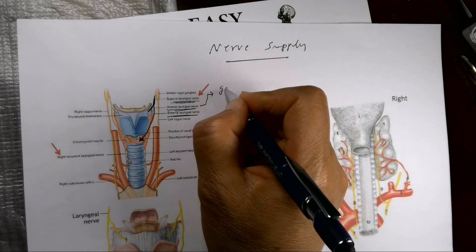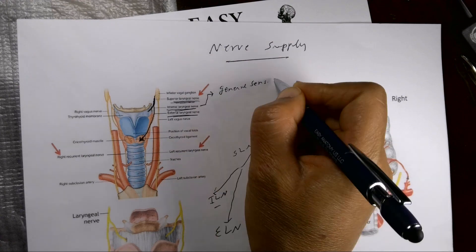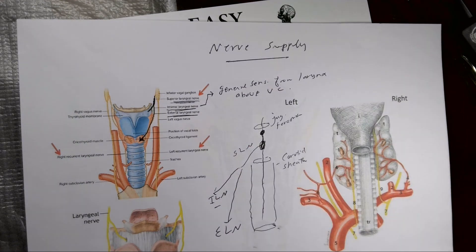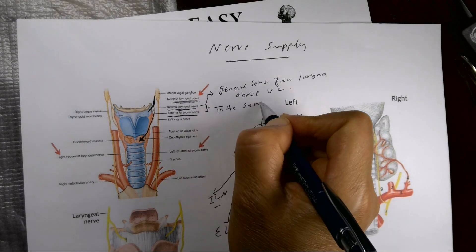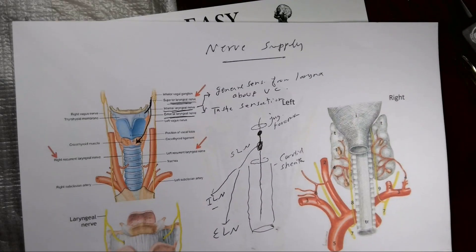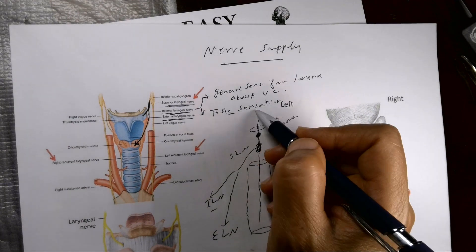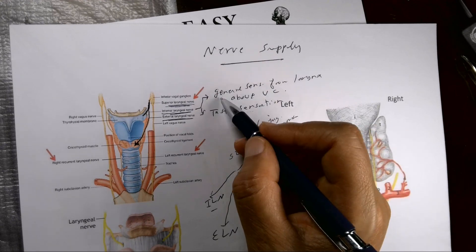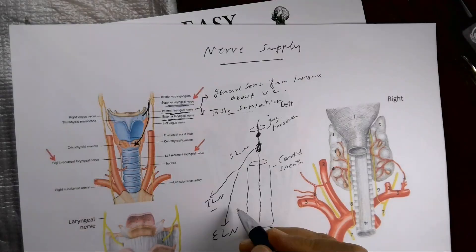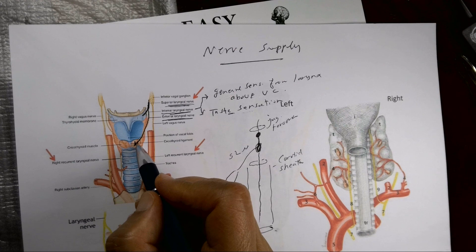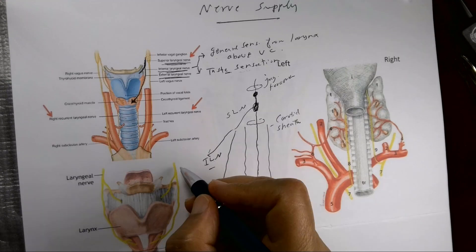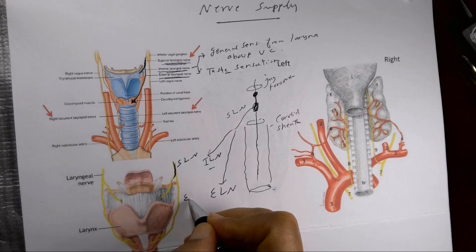The internal laryngeal nerve is purely sensory, carrying general sensation from the larynx above the vocal cord — the upper half of the larynx — plus taste sensation from the epiglottis and general sensation from the posterior part of the tongue. The external laryngeal nerve supplies one muscle: the cricothyroid, which produces tension over the vocal cord to change the tone of the voice.